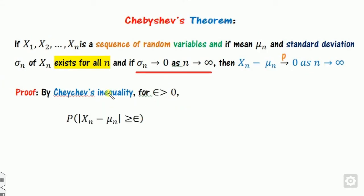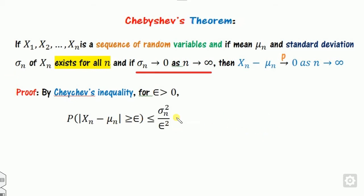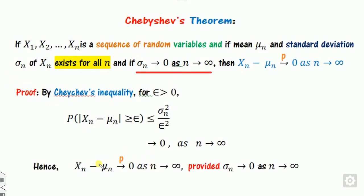The proof uses the Chebyshev inequality: P(|x_n - mu_n| >= k*sigma_n) <= 1/k². Here k = epsilon/sigma_n. Substituting the value of k, the bound becomes sigma_n²/epsilon², which clearly goes to 0 as sigma_n approaches 0. Therefore, x_n minus mu_n converges to 0 in probability.